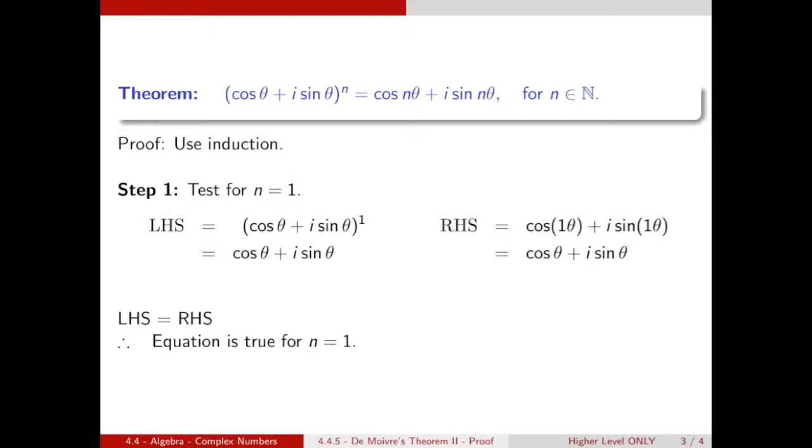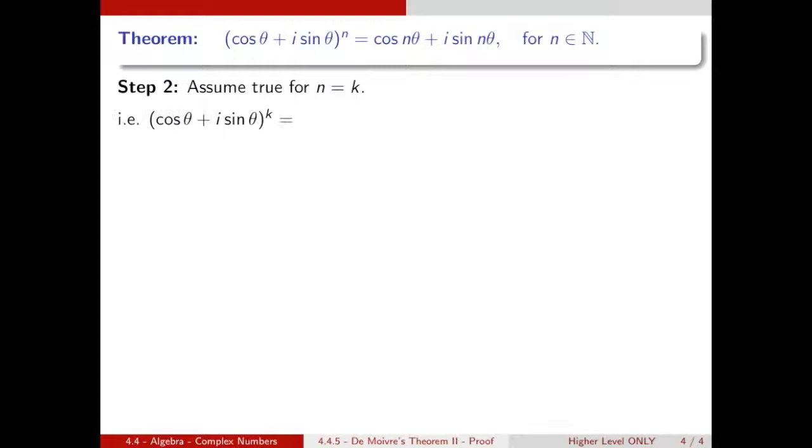Step two, we assume it's true for n equals k. So we assume cos theta plus i sine theta to the power of k equals cos k theta plus i sine k theta. So there we've just replaced n with k.